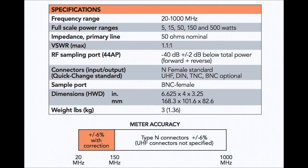In review, the specifications for this meter, the Model 44A or 44AP are as follows: 20 to 1,000 megahertz, 5, 15, 50, 150, and 500 watts full scale. 50 ohms nominal. 1.1 to 1 is the VSWR max for the device. The sampling port is 40 dB down, plus or minus 2 dB, for monitoring purposes. Comes with standard N female on each side. You can get UHF connectors, DIN connectors, TNCs, BNCs as options. Sampling port is a BNC. The meter accuracy is plus or minus 6% if you use the correction factors. Above 150 megahertz, it's plus or minus 6% overall.